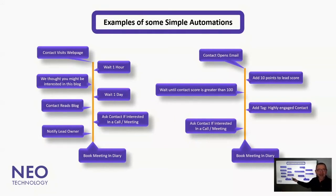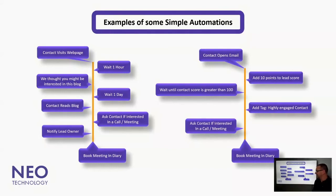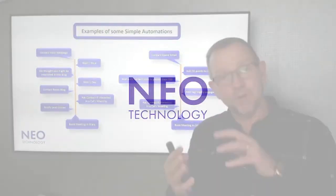So they read the blog that you've sent them, you get a notification back to say 'so-and-so has just read the blog,' and at that point there's a notification sent to the lead owner. Then we can start to say, 'Are you interested in a meeting?' or 'Should we have a conversation?'